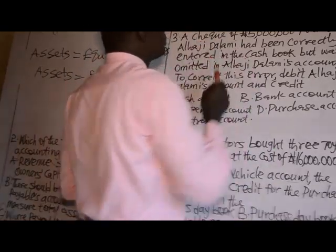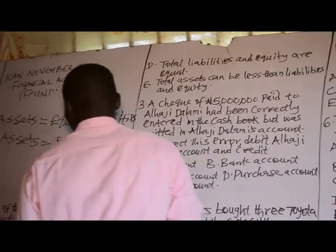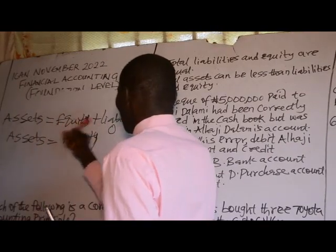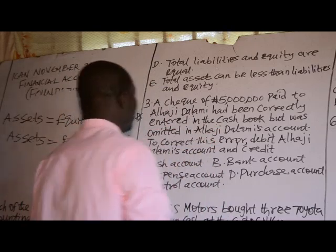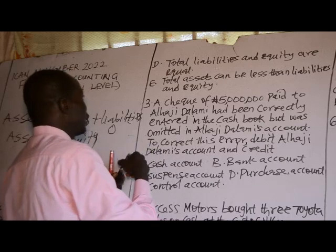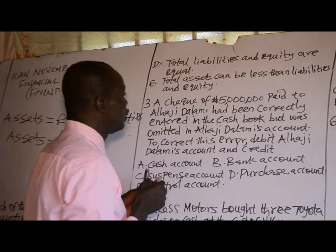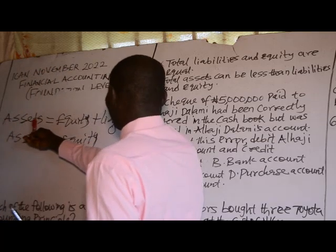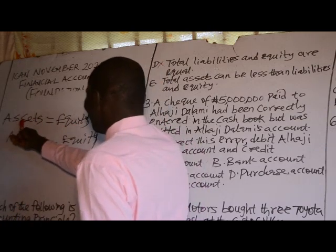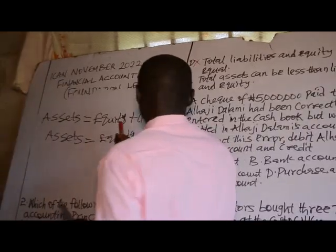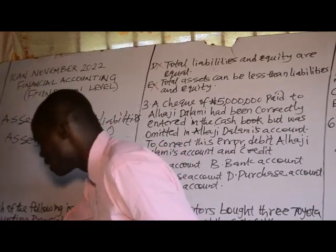Option D: total liabilities and equity are equal. Equity and liabilities can never be equal, so this equation is not correct. Option E: total assets can be less than liabilities. From the accounting equation, Assets = Equity + Liabilities, so assets cannot be less than liabilities alone. The answer cannot be E.